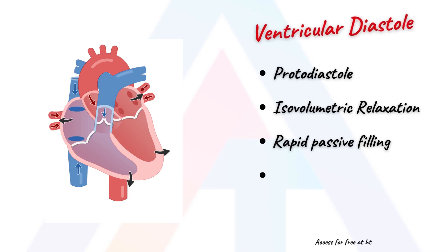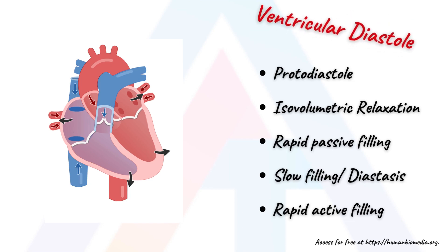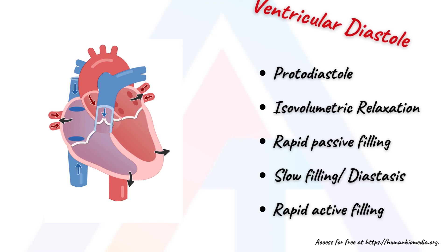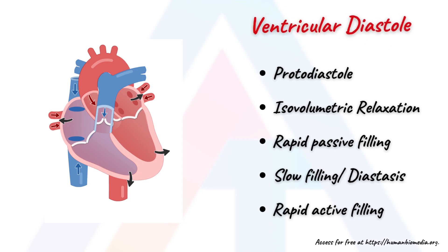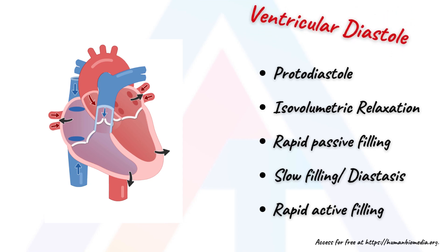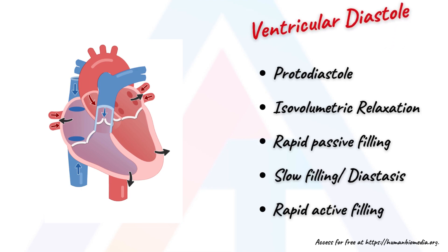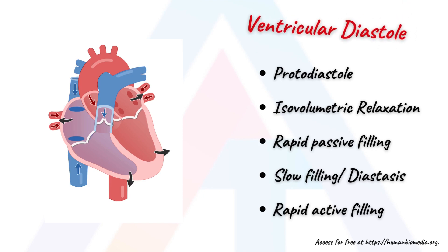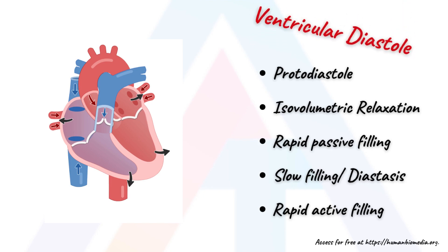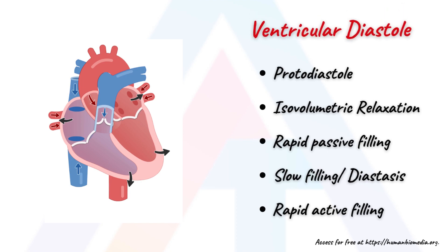Ventricular diastole consists of five sub-phases. Ventricular pressure drops below the arterial pressure, causing the semilunar valves to close, but the atrioventricular valves remain closed as well, resulting in a brief period of relaxation with no change in volume. The phase immediately preceding this is called the protodiastole. The closure of the semilunar valves causes the second heart sound. Ventricular pressure then drops further, going below the atrial pressure, causing the atrioventricular valves to open and blood flows from the atria into the ventricles, filling them passively. Blood flows from the major veins into the relaxed atria and from there into the ventricles. This is followed by a phase of slow filling called diastasis.